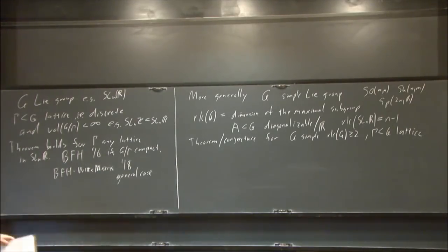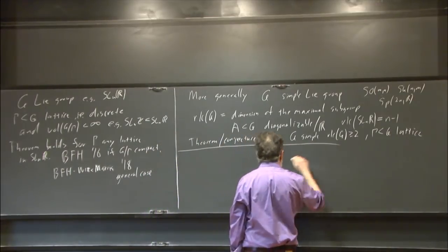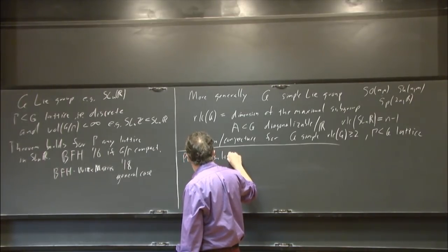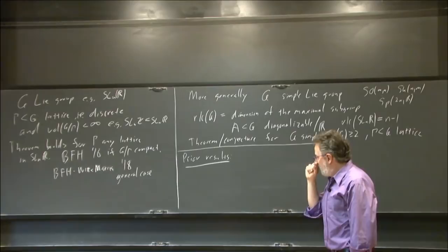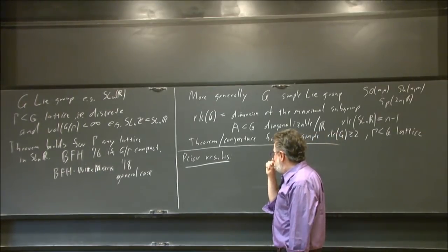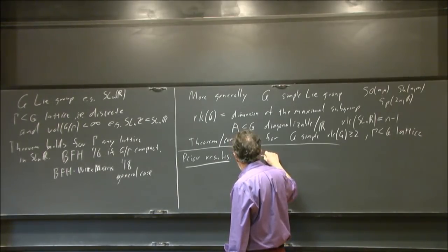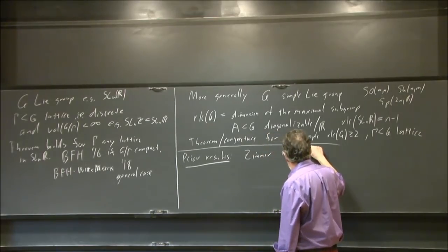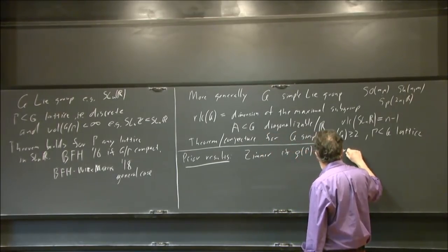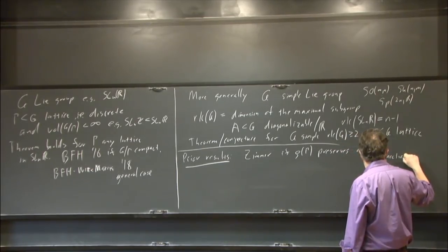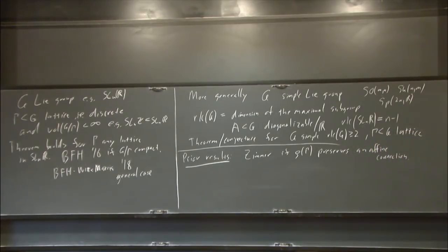I do want to say a little bit about prior results. One reason Zimmer conjectured this: Zimmer proved the theorem if rho of Gamma preserves an affine connection—that's a really strong assumption, and this is around 1984. Why is this strong? Because the group of automorphisms of an affine connection is a finite-dimensional Lie group. So rather than looking at an infinite-dimensional target, you're looking at a finite-dimensional target.